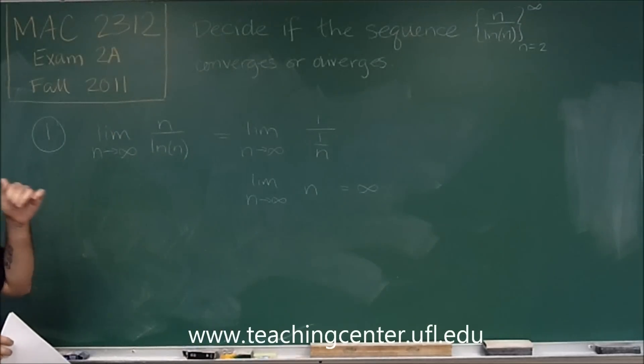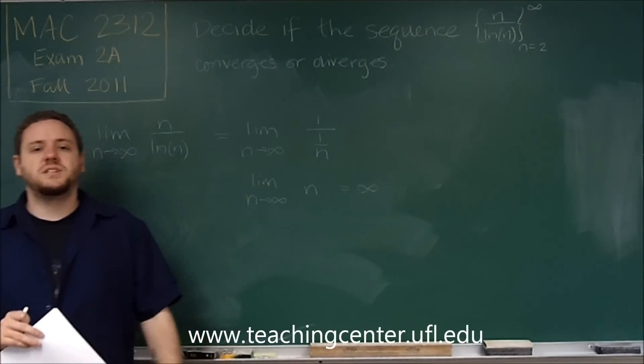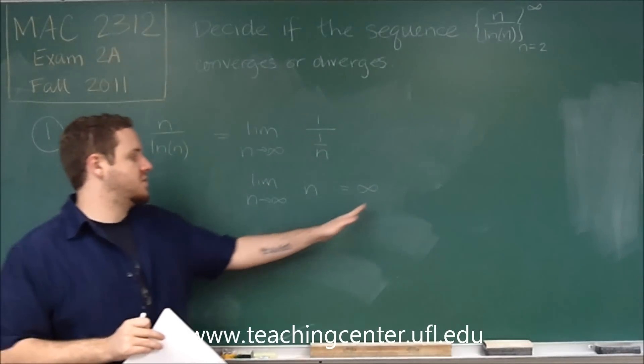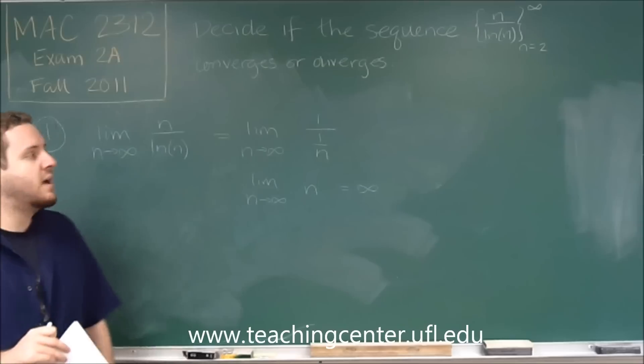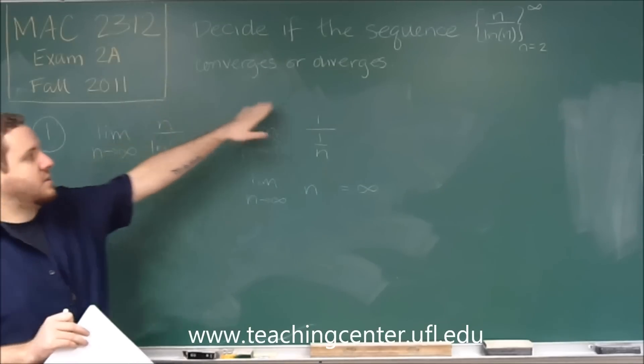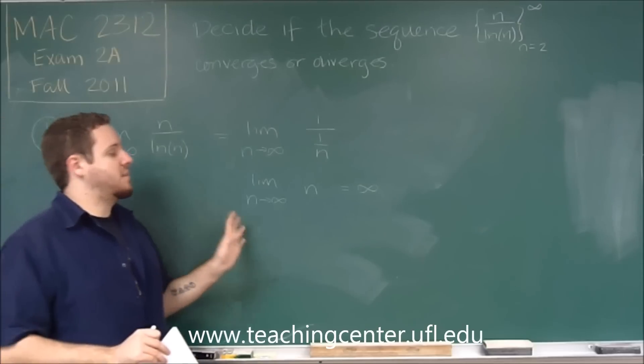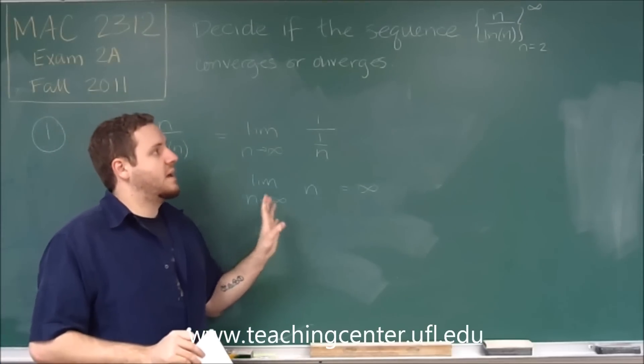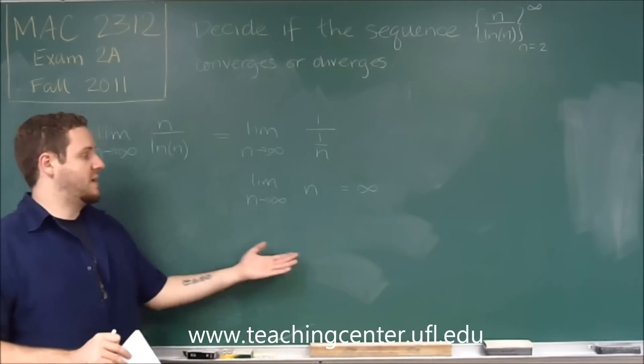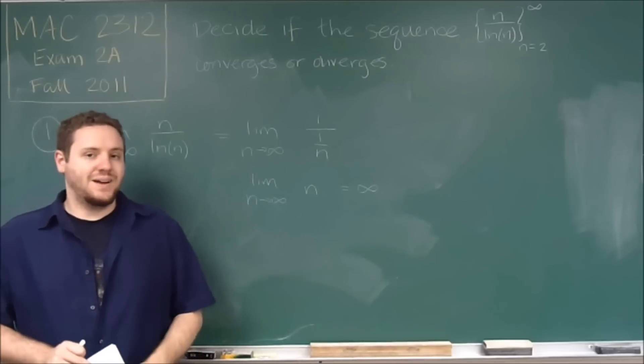So therefore, this sequence, as you go to infinity, the numbers just keep getting larger and larger, and eventually progress towards infinity. Therefore, we would say that this sequence diverges. Remember, a sequence can only converge if, as n goes to infinity, it approaches some finite number. We didn't have that, so we know that this sequence diverges.